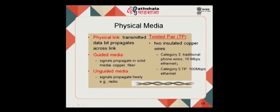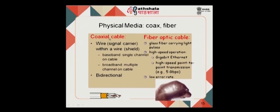Cat 3 supports only up to 10 Mbps, while Cat 5 can support up to 100 Mbps ethernet. Another wired option is coaxial cable — familiar from TV connections — which has a central inner wire (signal carrier) surrounded by a shield. Coaxial cable supports two transmission modes: baseband (single channel on the cable) and broadband (multiple channels on the cable), and also allows bidirectional data transfer.